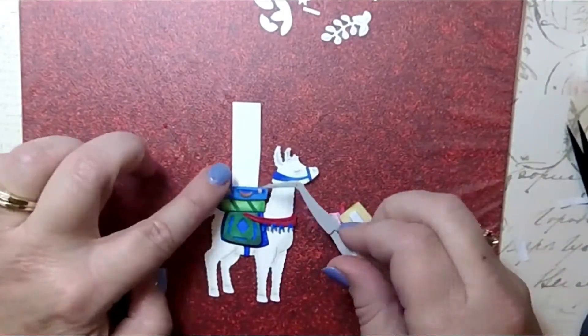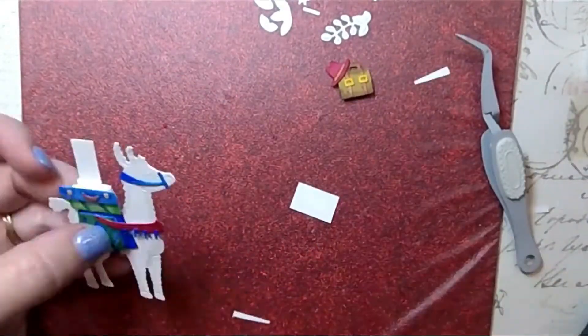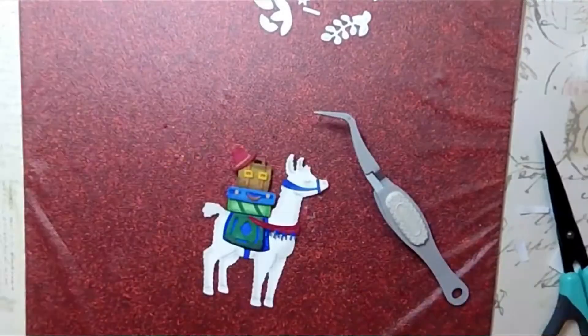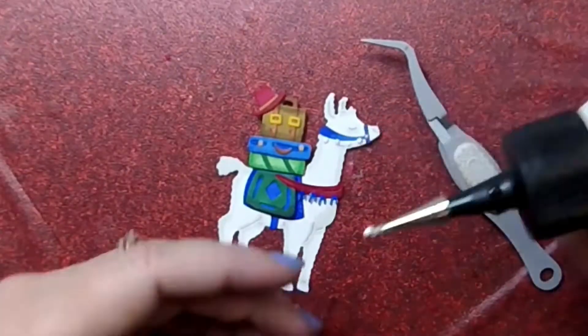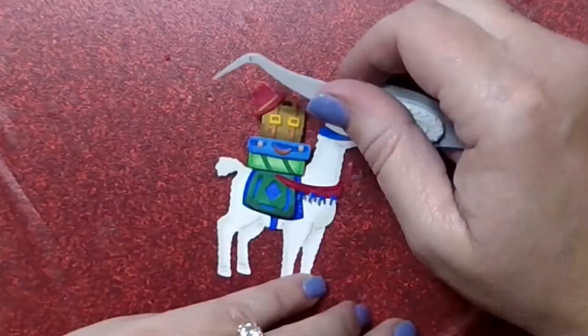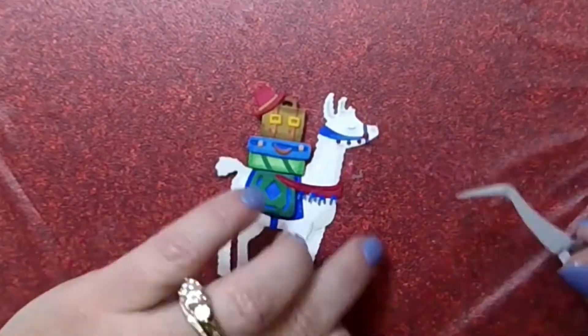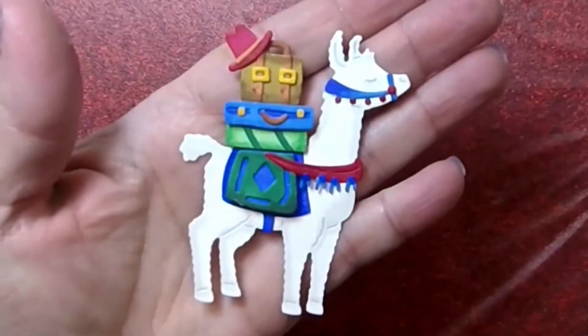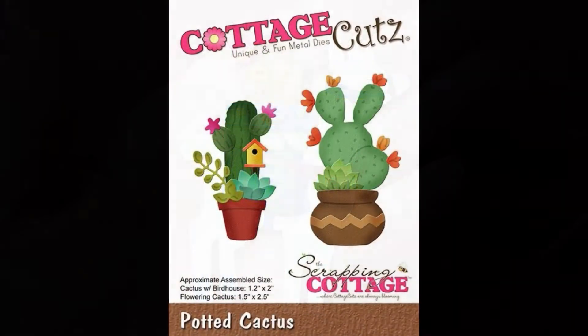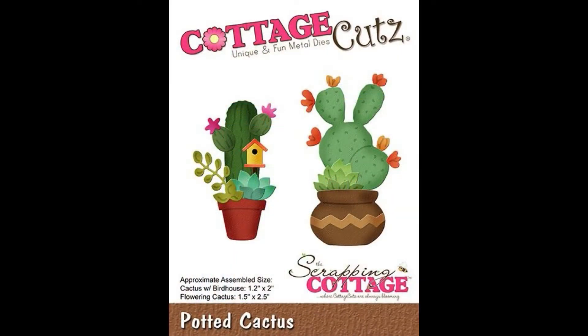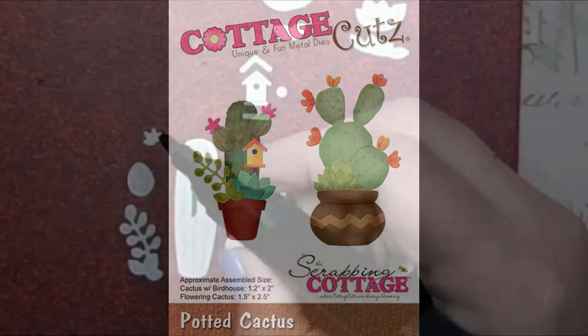Now you'll see that I added this strip of paper in the back of the llama, and that's because I want to build up some support for all the baggage. Then once I did that, I cut off the excess on the top so that you wouldn't see it, but this allows me to make the llama one full complete piece. Now here are the potted cactus dies.